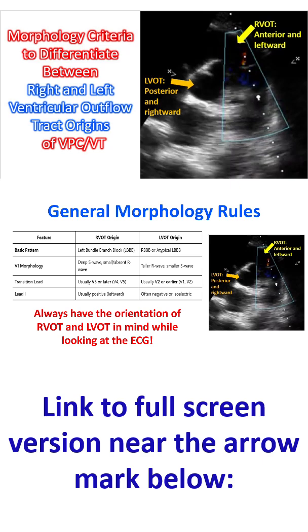Regarding V1 morphology: in RVOT origin, there is a deep S wave with a small or absent R wave — again the LBBB pattern. In LVOT origin, V1 shows a tall R wave or a small RS wave.